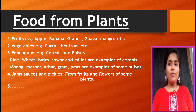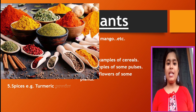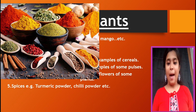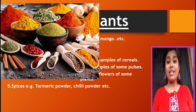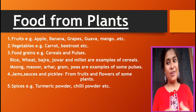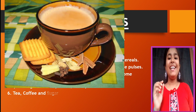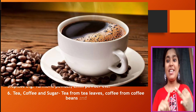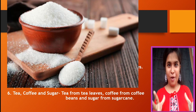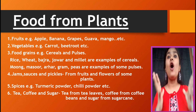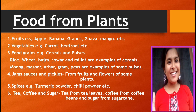We also have many things which we add to our food, known as spices. For example, turmeric powder, chili powder, etc. They are additives that add flavor, taste and color to food. Number six is tea, coffee and sugar — tea from tea leaves, coffee from coffee beans and sugar from sugar cane. So tea, coffee and sugar are also obtained from plants.